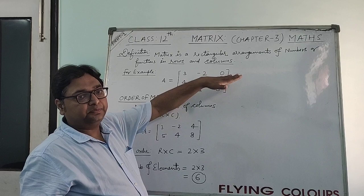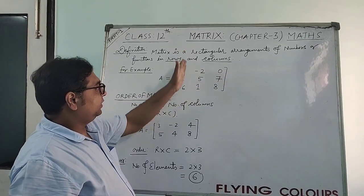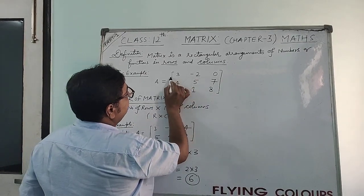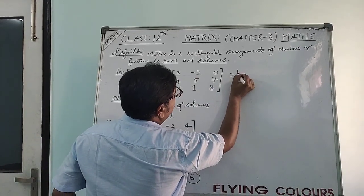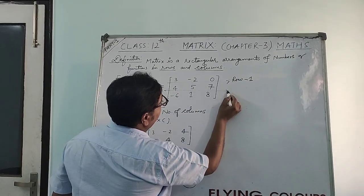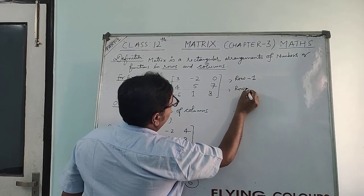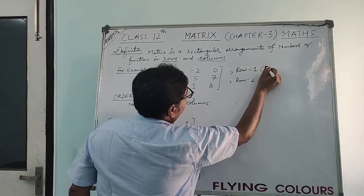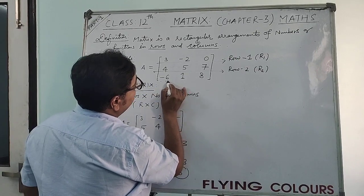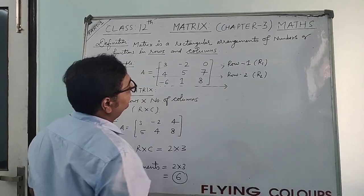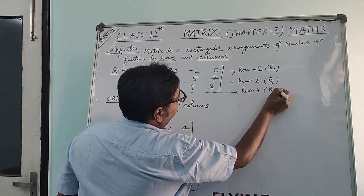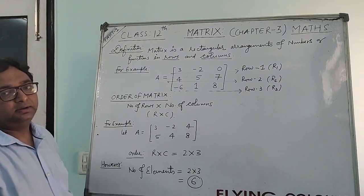The horizontal data is called rows and the vertical data is called columns. Like, 3, minus 2, 0, this is our first horizontal row, that is called row 1. This is our second horizontal data, that is called row 2. It will be represented by R1 and it will be represented by R2. Similarly, the third horizontal data will be called as row 3 and normally written by R3.